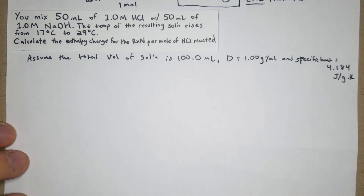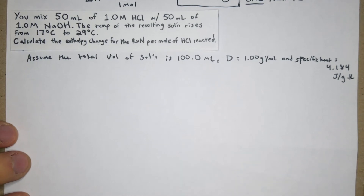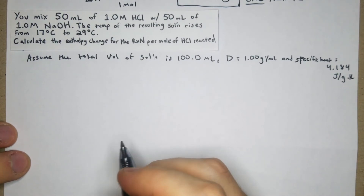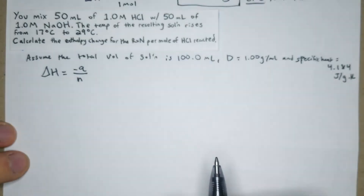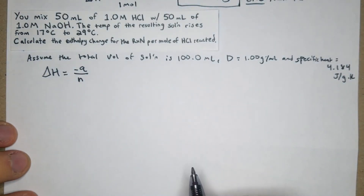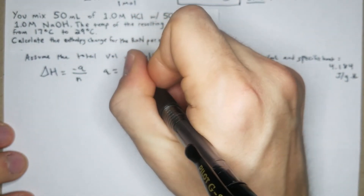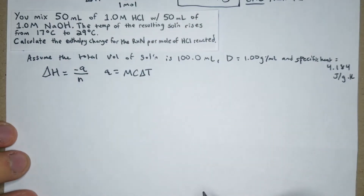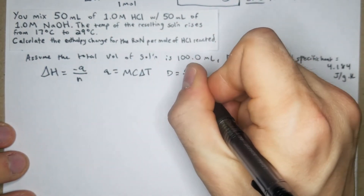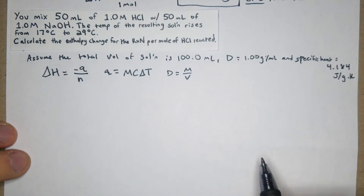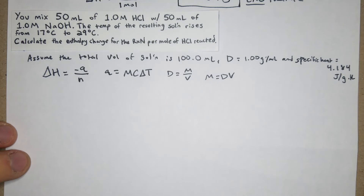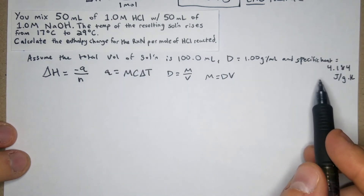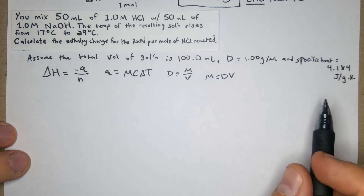This is a good time to pause and try the problem. The relevant formulas are: ΔH = −q/n, q = mcΔT, d = m/v, and m = dv. Let's gather information. First, m = dv = 1 g/mL × 100 mL = 100 grams.